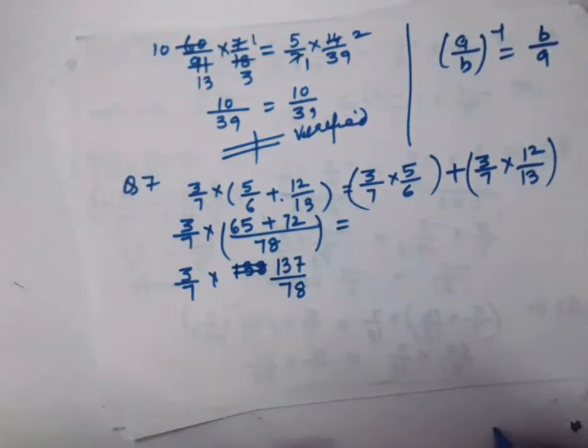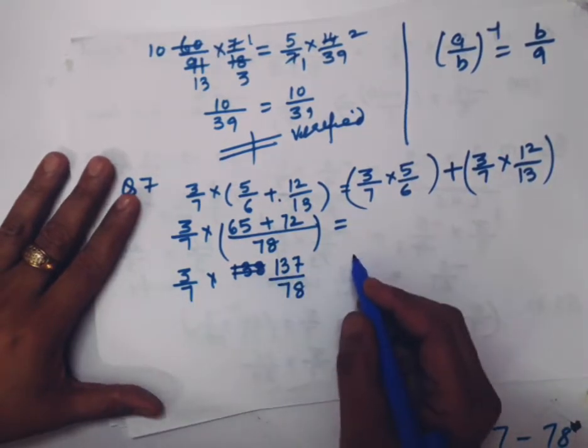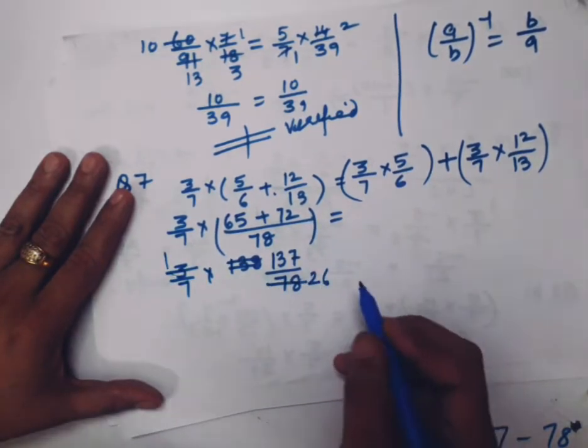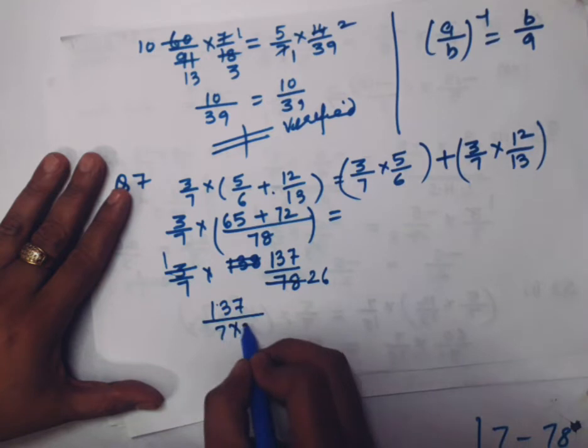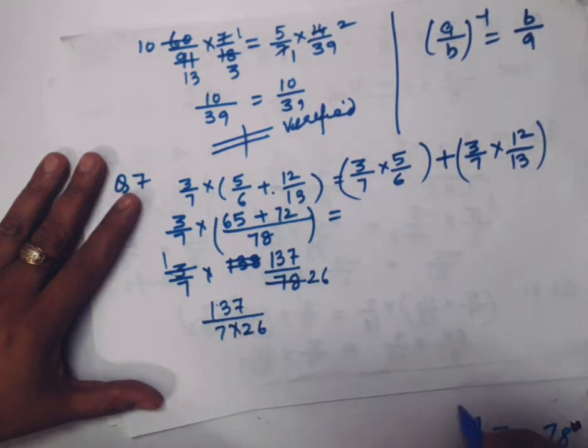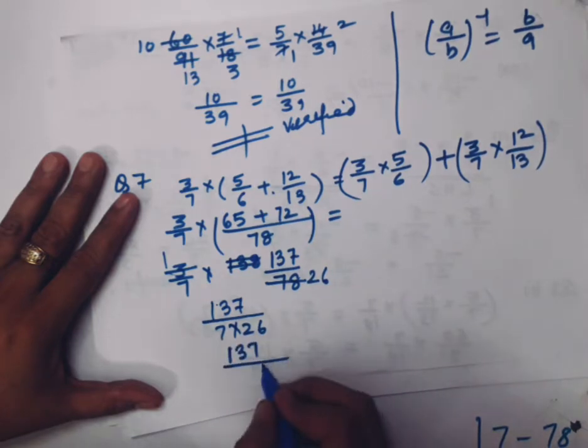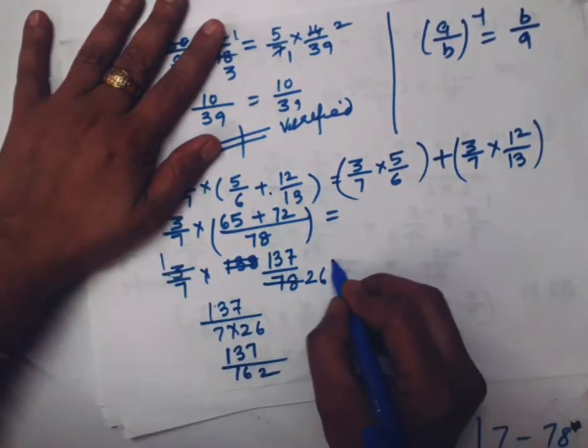137/7 × 26. Let me see by multiplying 7 × 26, what is 26 times 7? 162. Means 137/162. This should also be 137/162. I'll put equal sign. See how many steps it takes to solve.